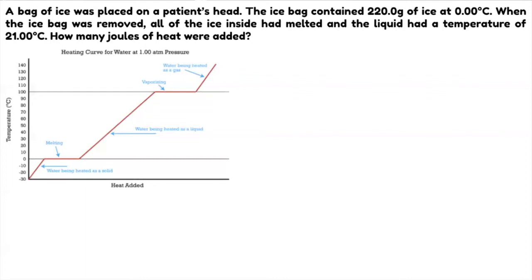Next, determine the current state of your sample and the endpoint. It says the ice bag contained ice at 0 degrees Celsius, so you are at 0. It also says the ice had melted and the liquid had a temperature of 21 degrees Celsius, so the endpoint is there.